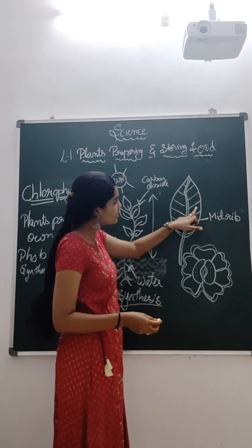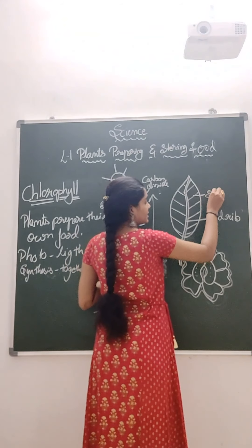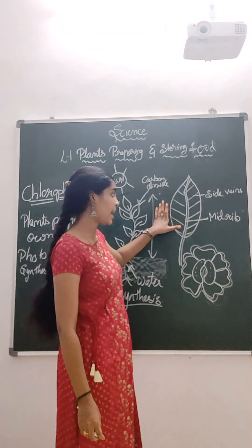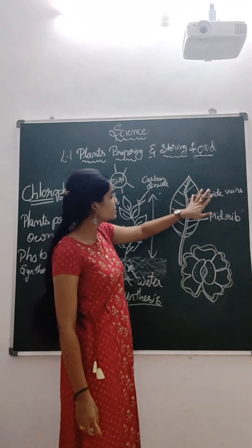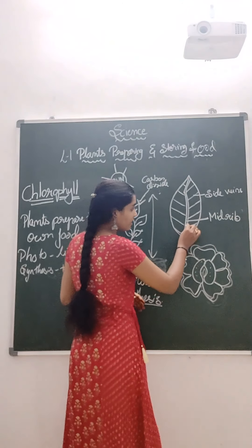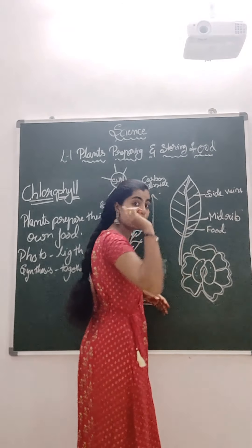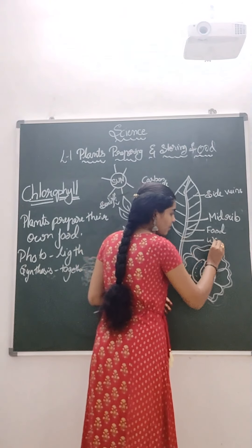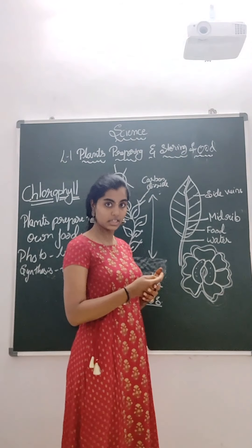The small lines are called side veins. A leaf has two parts — the mid-rib, which is the long vein, and small side veins. With the mid-rib, one vein carries food and supplies it to all parts of the plant. The other vein takes water to all parts of the plant.